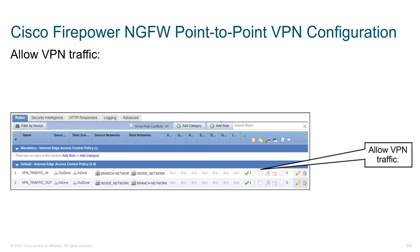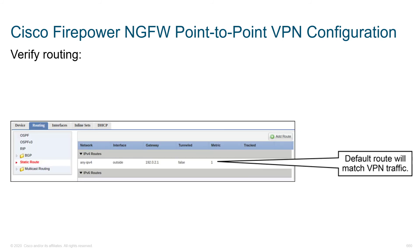Here we've got a Firepower appliance and within the rules section, we've got rules permitting or possibly denying certain traffic flows. We just want to make sure that all traffic required for VPN traffic to flow in or out is going to be permitted. Additionally, we've got to verify routing — if traffic trying to reach the remote office doesn't hit the outside interface, it's never going to be encrypted and never going to reach the other party.